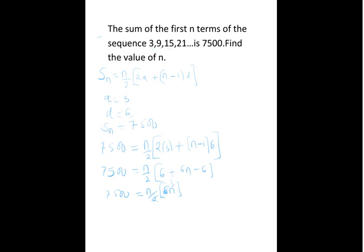So 7,500 is equal to 3n squared, that is n times n. Divide by 3 on both sides.